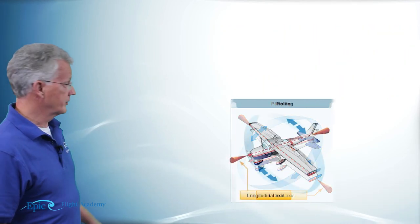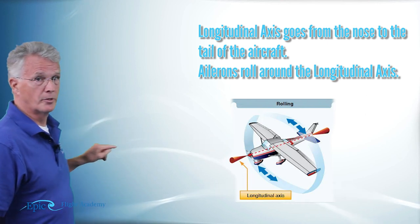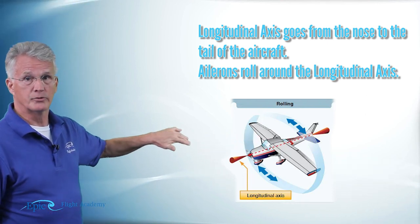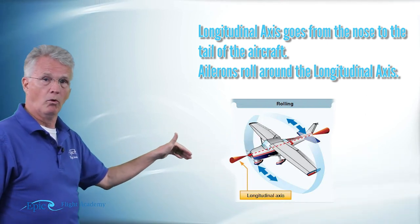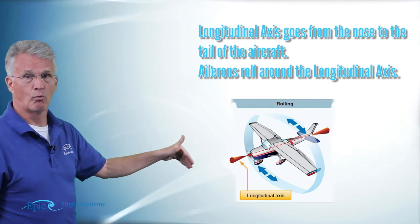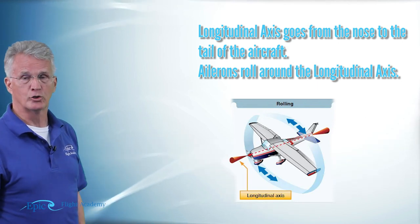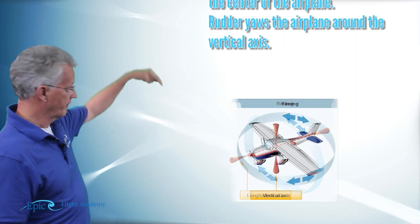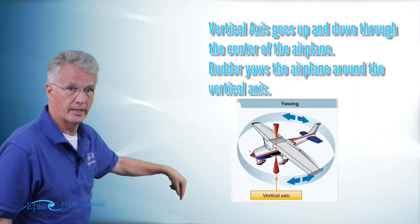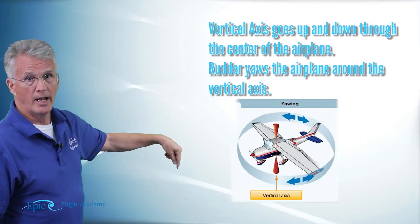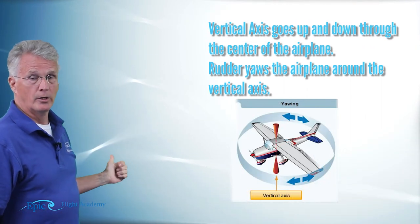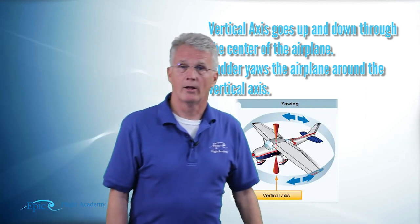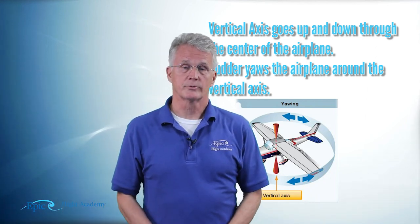The longitudinal axis goes from the nose to the tail, and the ailerons roll the airplane around the longitudinal axis. And thirdly, the vertical axis goes up and down, and the rudder yaws the airplane around the vertical axis.